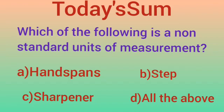Which of the following is a non-standard unit of measurement? A. Handspans. B. Step. C. Sharpener. D. All of the above. Dear students, the answer is option D — all of the above — because handspans, steps, and sharpeners are all units of non-standard measurement.